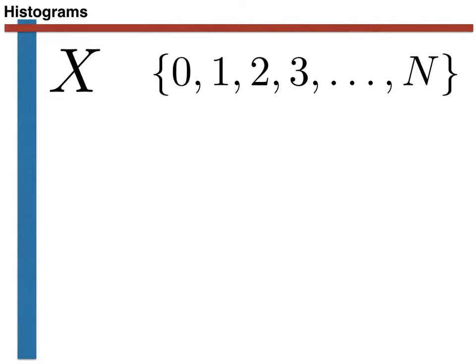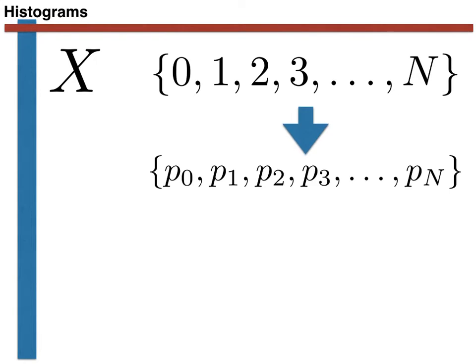Our experiment generates a discrete random variable that has some unknown probability mass function. The outcome of our experiment is thus a random number, capital X, that can take any integer value between 0 and N. Because X is a discrete random variable, there is a probability associated with each of these various outcomes. P0 tells us the probability of getting 0, P1 tells us the probability of getting 1, P2 tells us the probability of getting 2, and so on. These set of probabilities together comprise the probability mass function for the random variable.